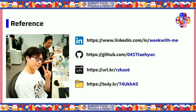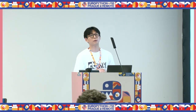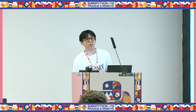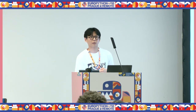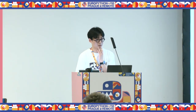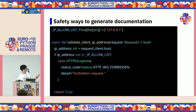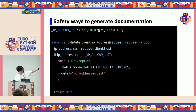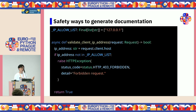Thank you very much, Taehyun. We have a few minutes for questions. A question from the audience: you showed access control with IP address — is it also possible to give access based on domain users? Yes, we can. FastAPI gives the request object with the request class and it has host or domain information. So you can still access the domain, IP address, or whatever information you need.